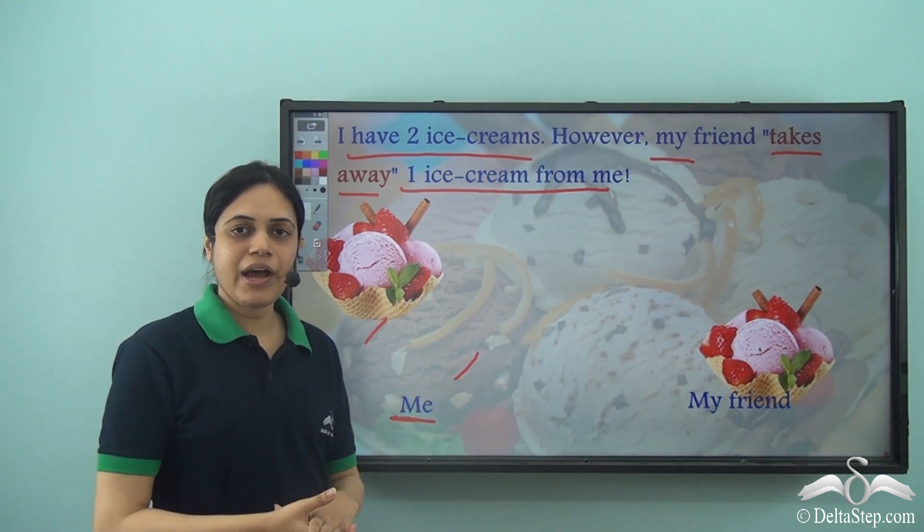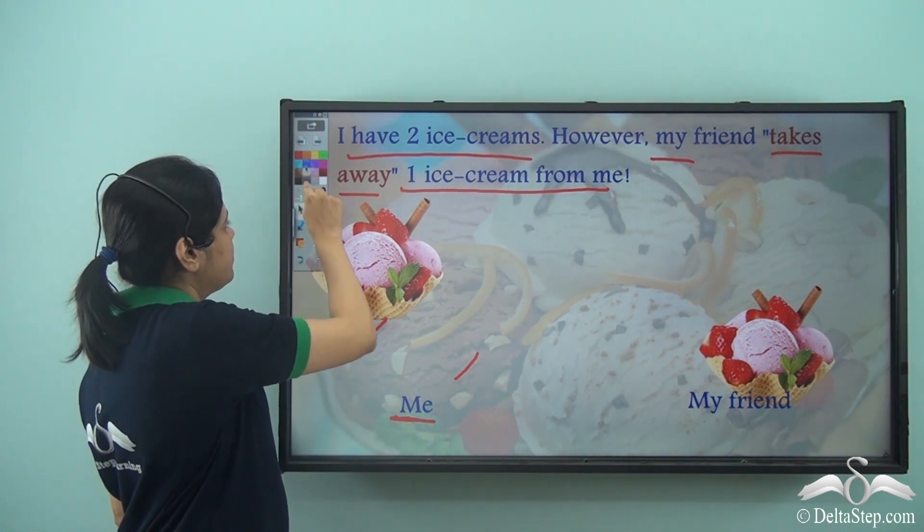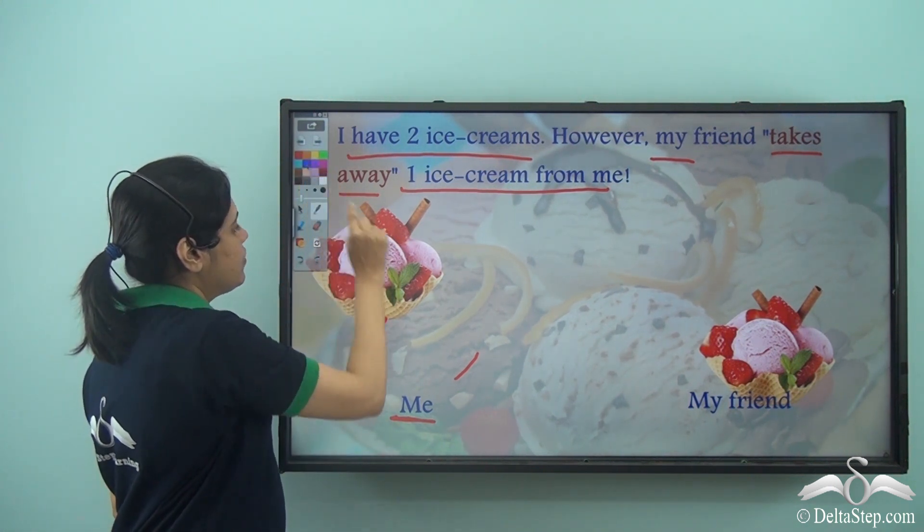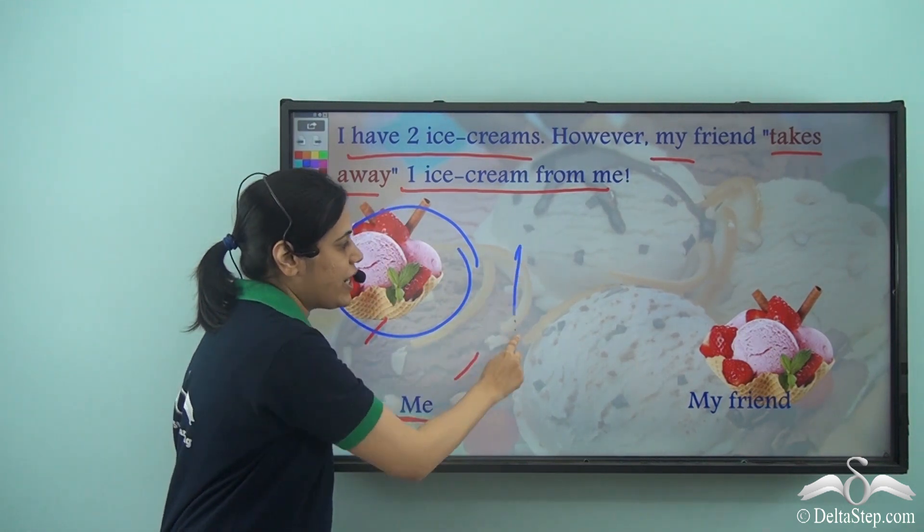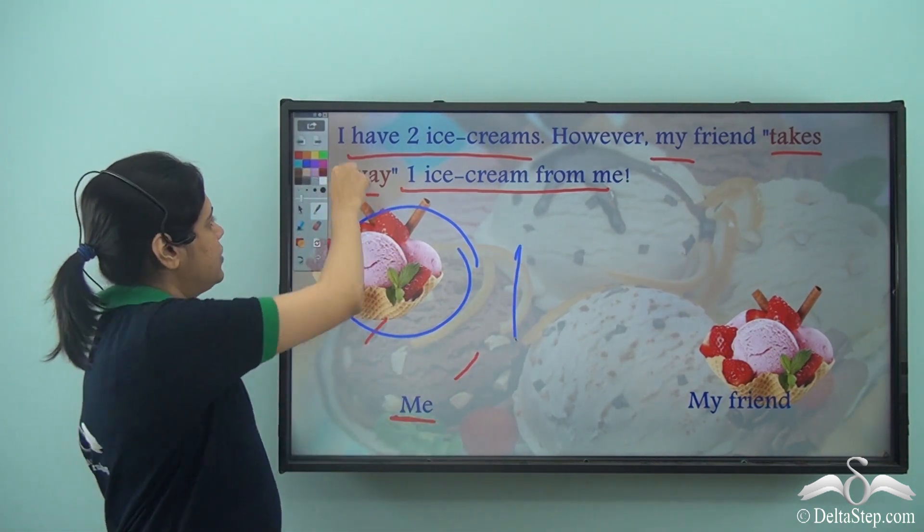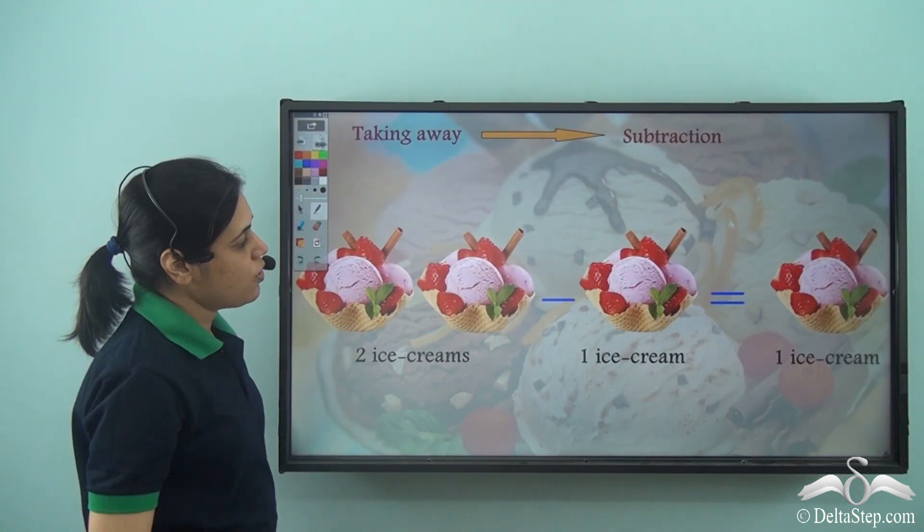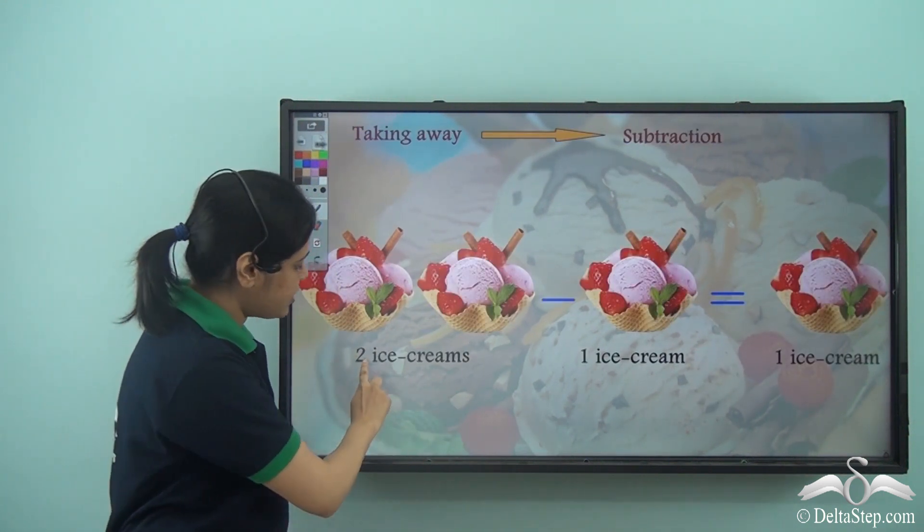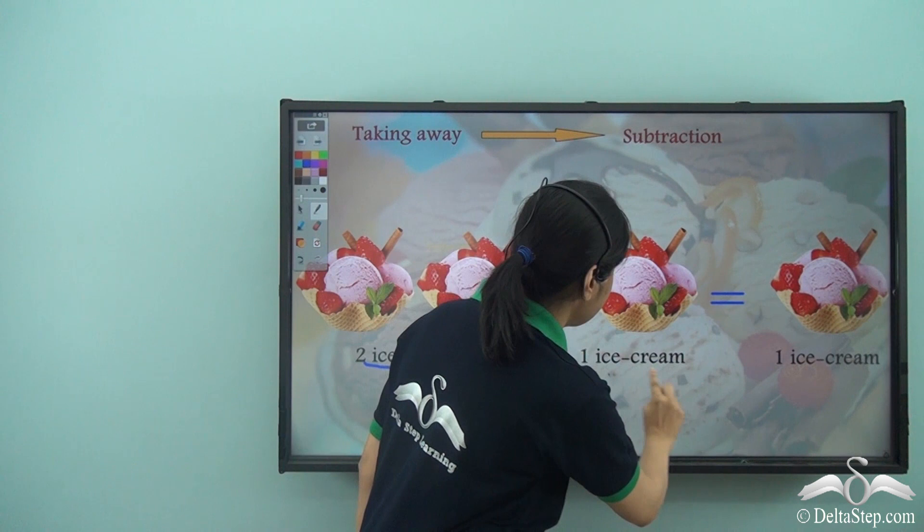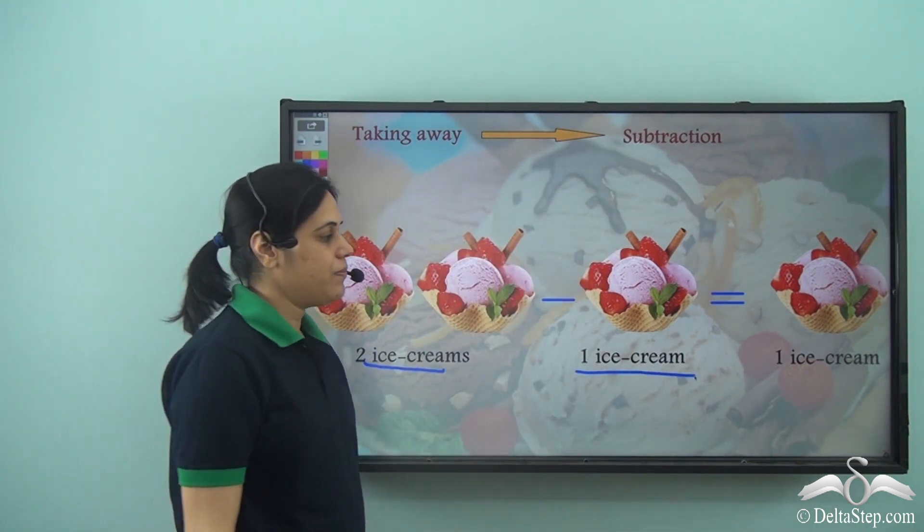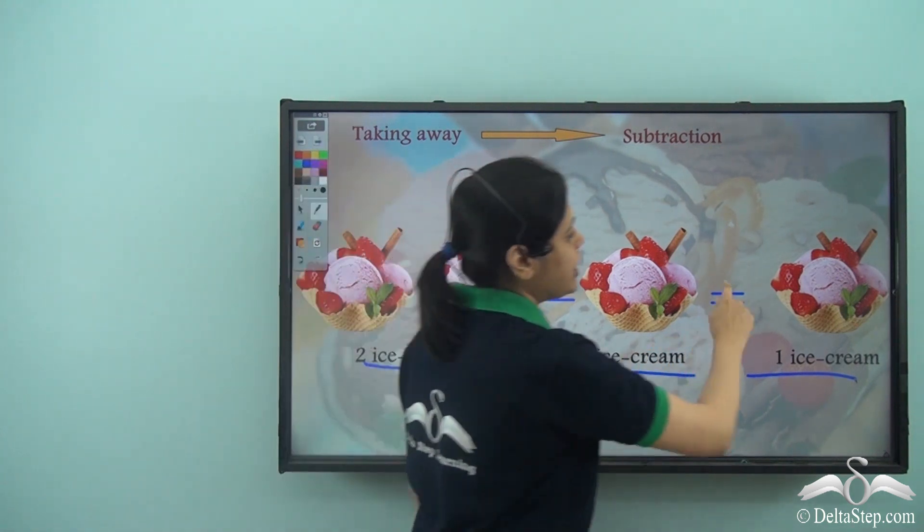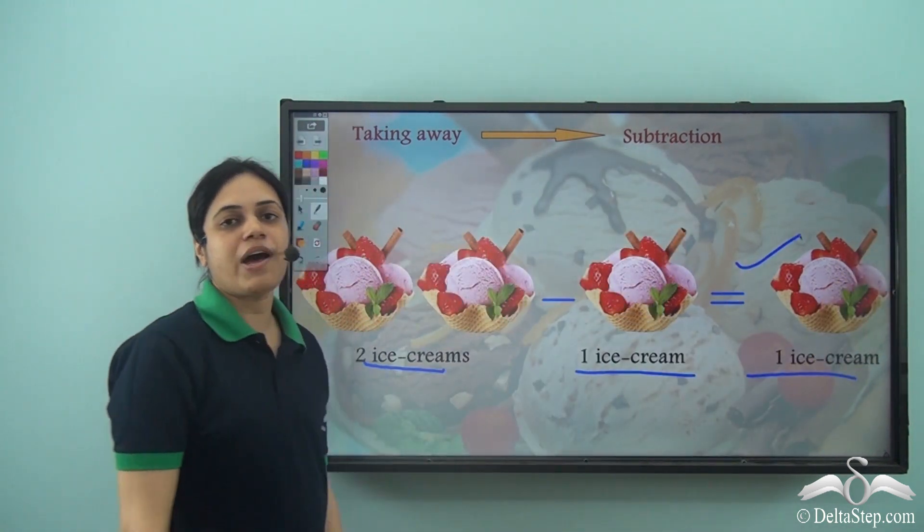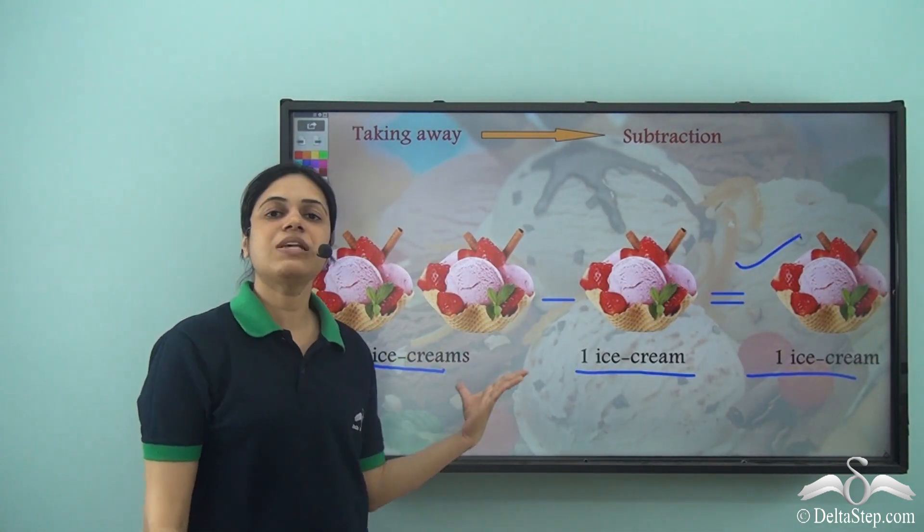How many ice creams do I have now? See? One. So just one ice cream. So if I have two ice creams and my friend takes away one ice cream, I am left with one ice cream. I can easily count this to find the answer of this subtraction.